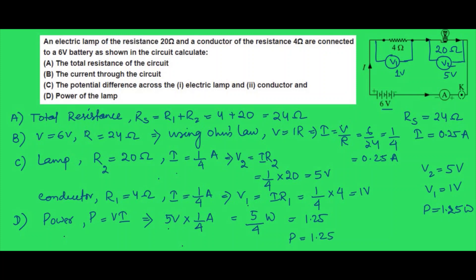So the power of the lamp is 1.25 watt. To summarize: total resistance of the circuit is 24 ohm, current through the circuit is 0.25 ampere, potential difference across the electric lamp is 5 volt, across the conductor is 1 volt, and the power of the lamp is 1.25 watt. I hope you understood this. Thanks for watching.